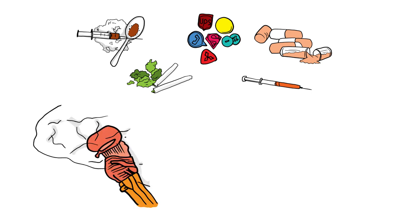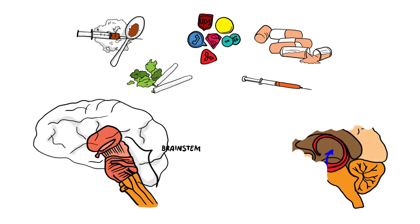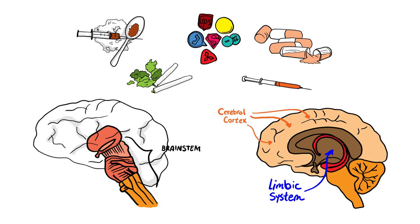Regions of the brain are disrupted by drug abuse. Brain stem, limbic system, and cerebral cortex are all affected.